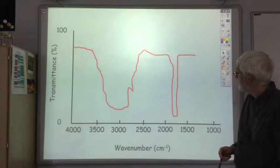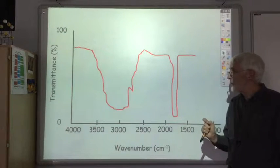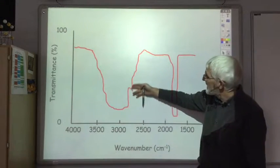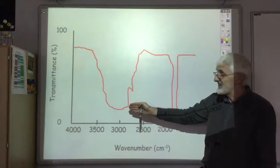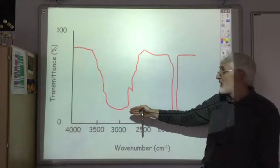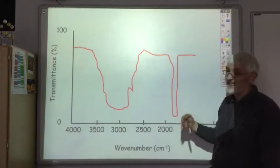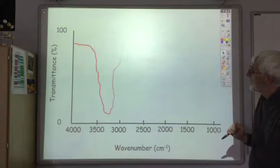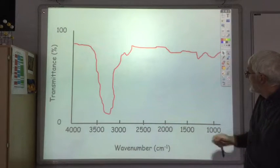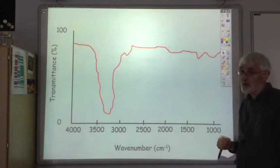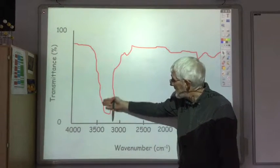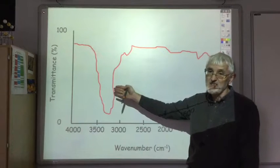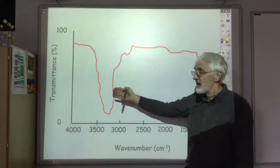In this second molecule, again there's a big peak about 1700, so we've got a C double bond O. And there's a big broad feature up here as well, centred round about 3000 — that suggests the OH in a carboxyl group, which together with the C=O tells you that you've got a carboxylic acid. And in the third example, there's no peak at 1700, so we know we haven't got a C=O. There is a big peak centred about halfway between 3000 and 3500, which suggests an OH group not in a carboxyl group — just an alcohol.